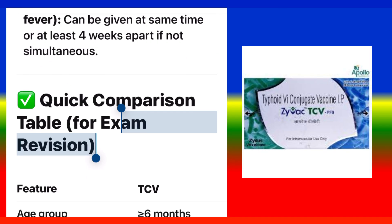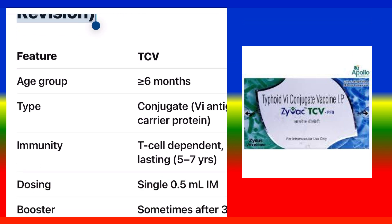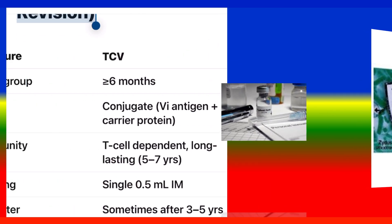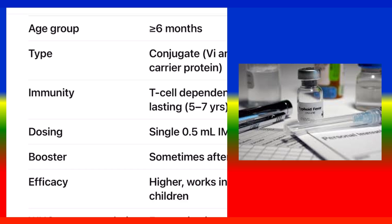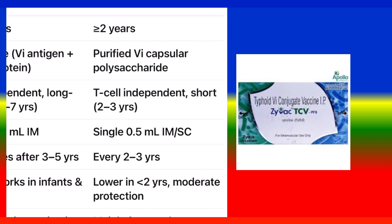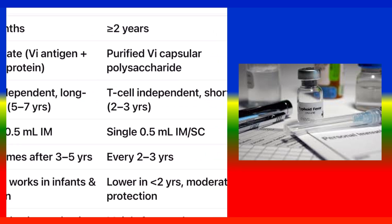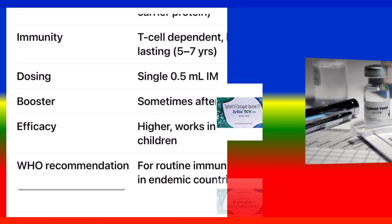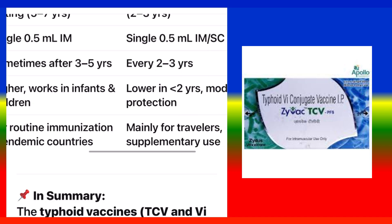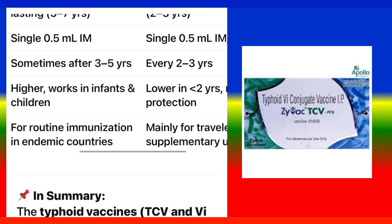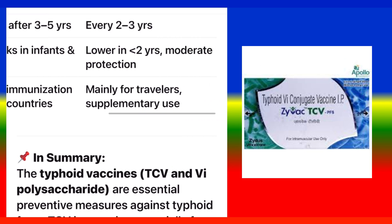Quick comparison table: Feature — TCV vs. VICPS. Age group: 6 months+ vs. 2 years+. Type: Conjugate (Vi antigen + carrier protein) vs. Purified Vi capsular polysaccharide. Immunity: T-cell dependent, long-lasting (5–7 years) vs. T-cell independent, short (up to 3 years). Dosing: Single 0.5 mL IM vs. Single 0.5 mL IM/SC. Booster: Every 3–5 years vs. every 2–3 years. Efficacy: Higher, works in infants and children vs. lower in under 2 years, moderate protection. WHO recommendation: Routine immunization in endemic countries vs. mainly for travelers and supplementary use.